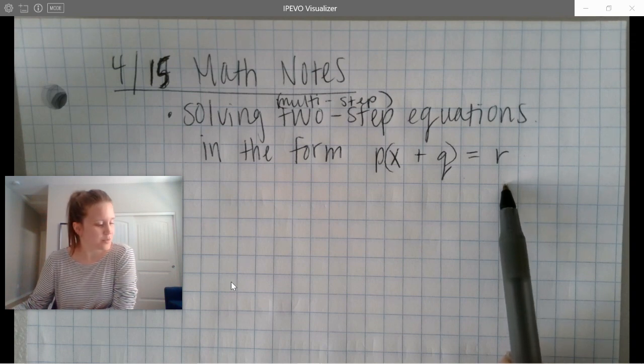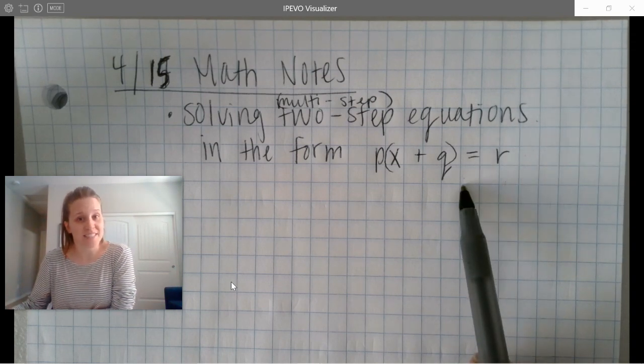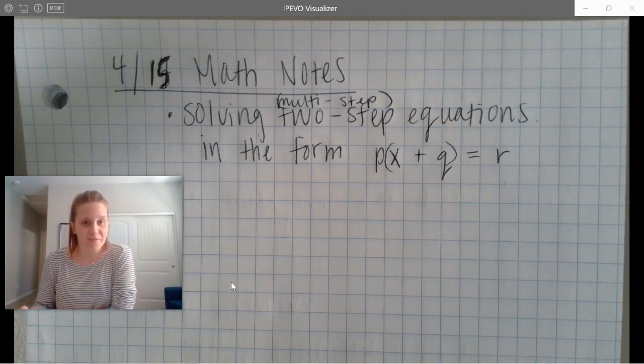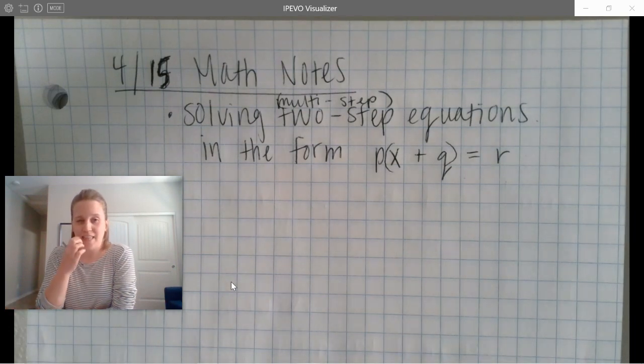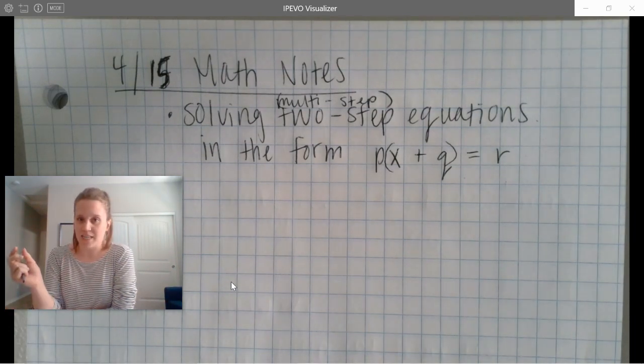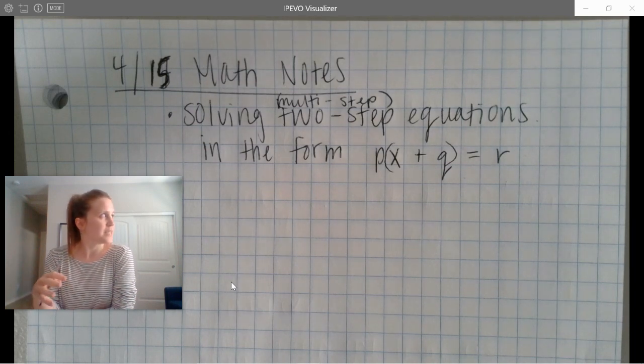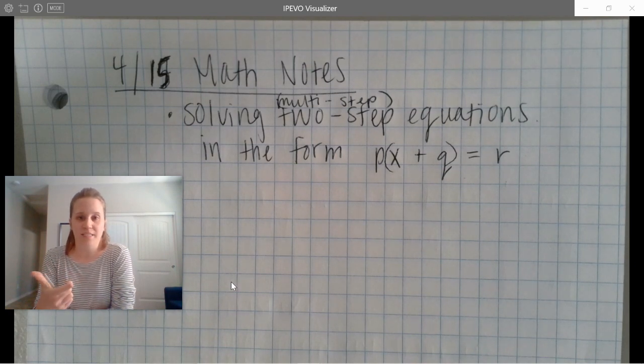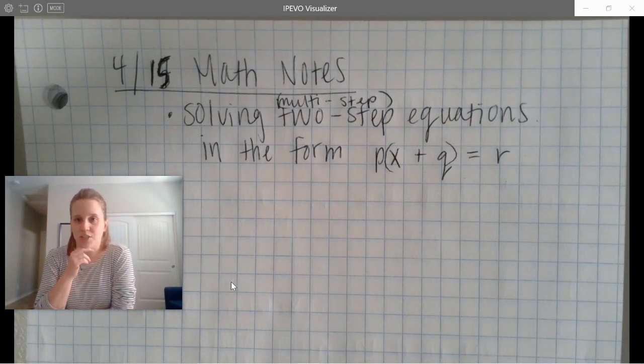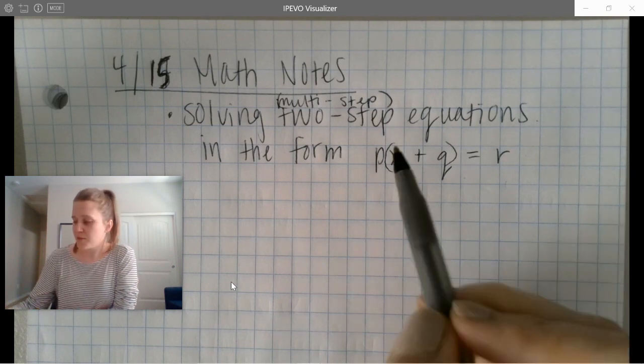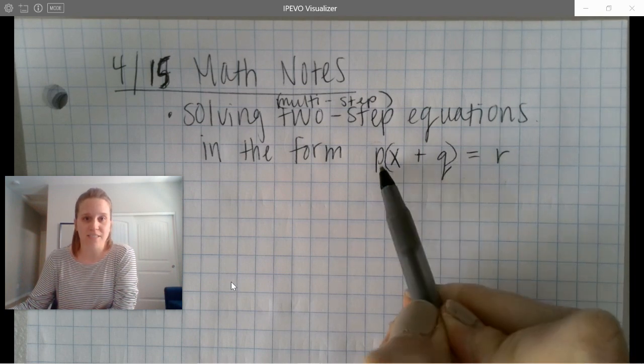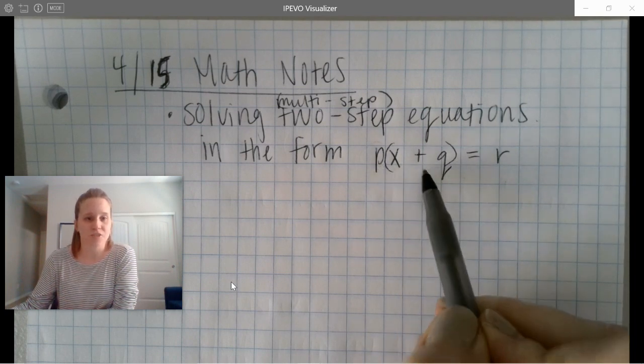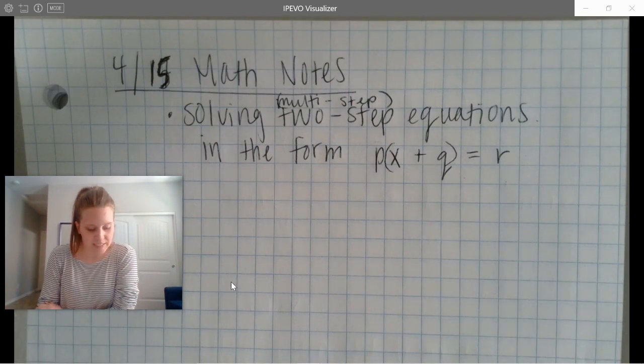And while you do that, I'll just talk about the difference between what we're doing today and what we practiced yesterday. We did a really good job on our work yesterday. We were solving two-step equations in the form where there was a variable term and a constant term, no parentheses, no grouping symbols. And we just followed those steps, add or subtract, and then multiply or divide to solve and then check using substitution. We're going to do a lot of that still today, but with the added complication of this set of grouping symbols and this factor that needs to be either distributed or divided. So that's what we're going to be talking about today.